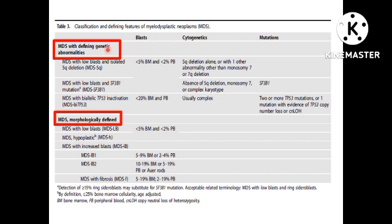MDS with defining genetic abnormalities and MDS morphologically defined are the 2 broad headings, under which you again have 3 subcategories each. There is a terminology called MDS with low blast and MDS with increased blast based on the blast percentage.